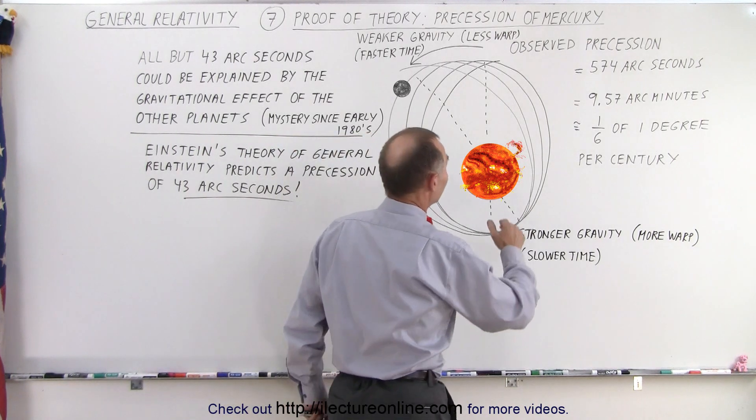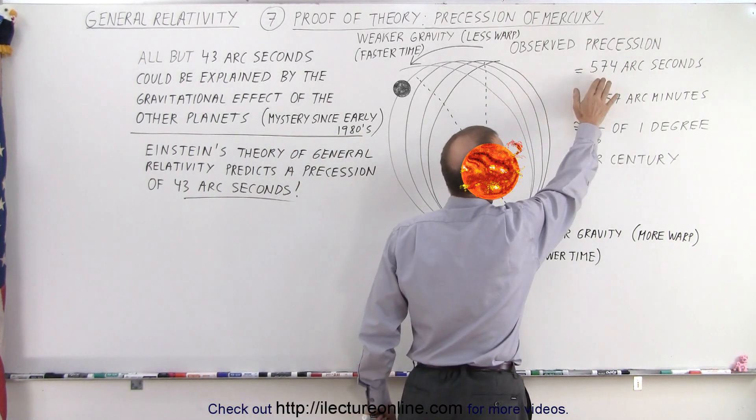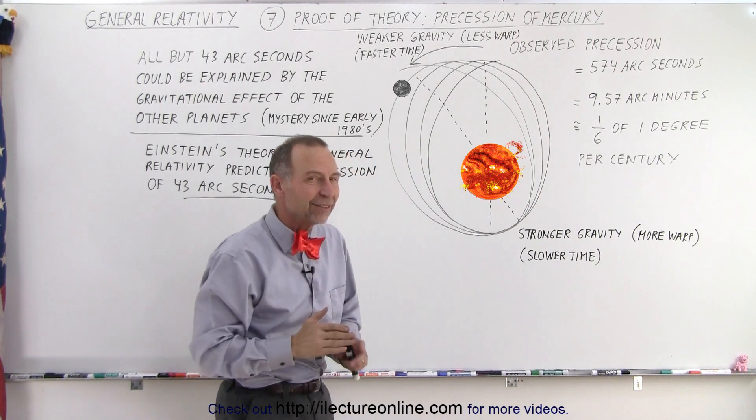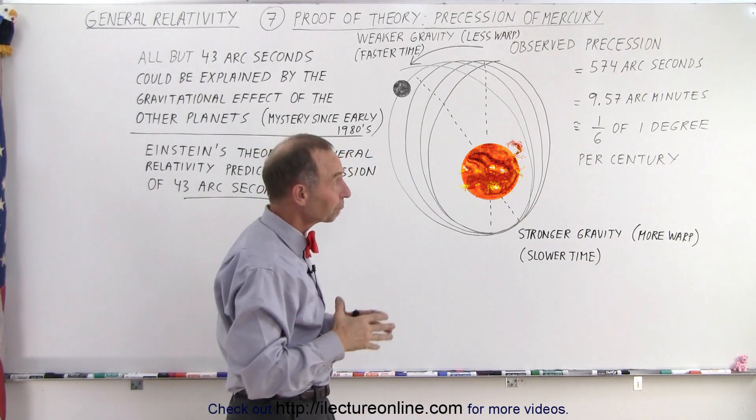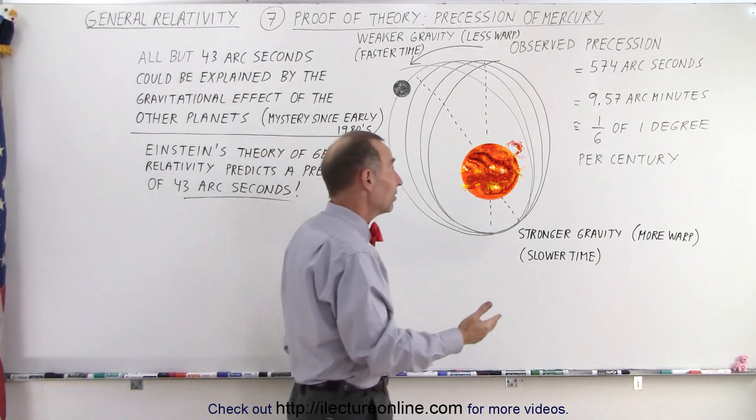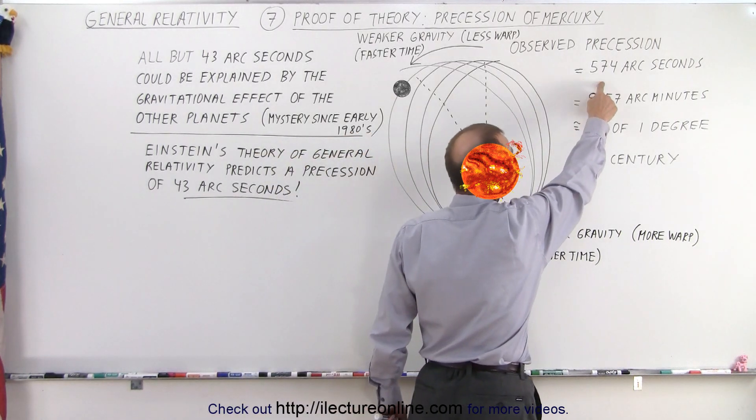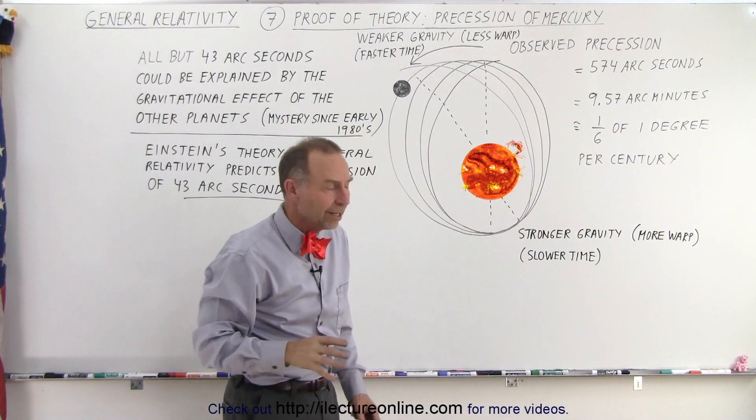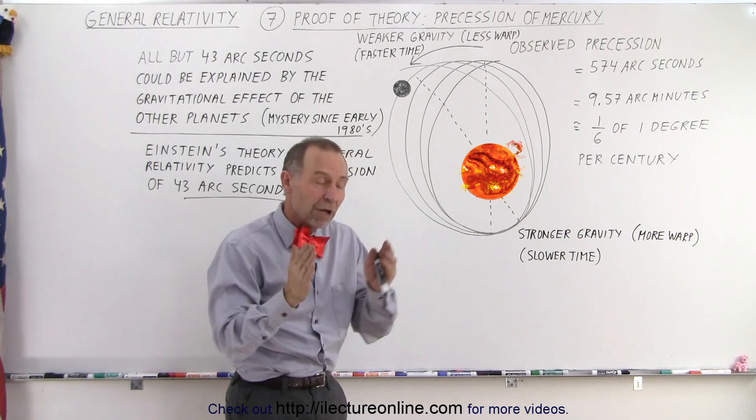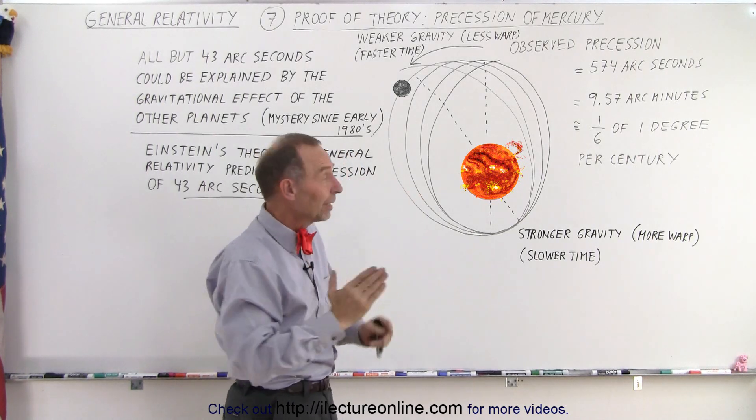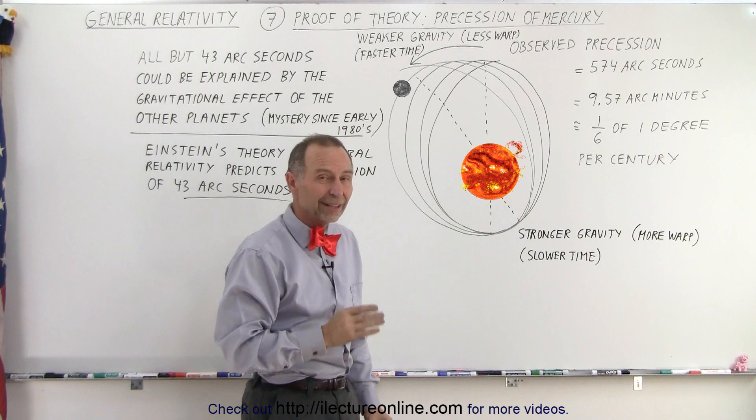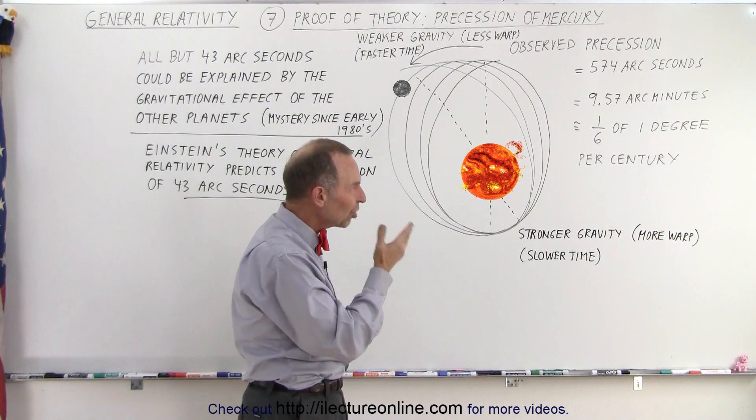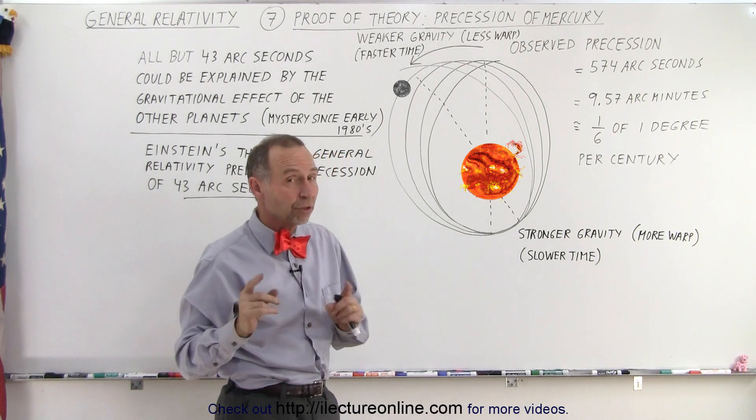Very careful observations showed that Mercury shifted 574 arc seconds every century. You may say that's not a lot, and indeed it's not. 574 arc seconds is only about 9.6 arc minutes, or about one-sixth of a degree. Can you imagine they were able to measure Mercury's orbital shift to that precision 200 years ago, when it's that small of a change in an entire century? But they were able to do that.